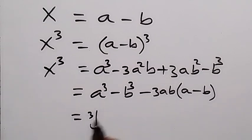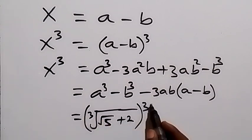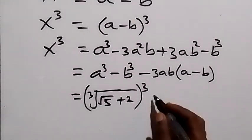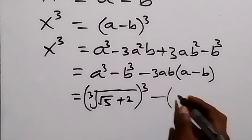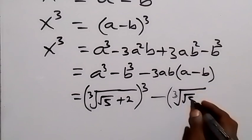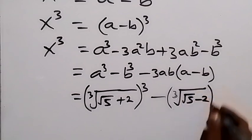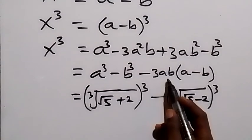We have a³ as the cube root of (√5 + 2) all raised to the power 3 — the cube root and cube cancel. Similarly for b³: the cube root of (√5 − 2) raised to power 3 also cancels. And we still have minus 3ab.